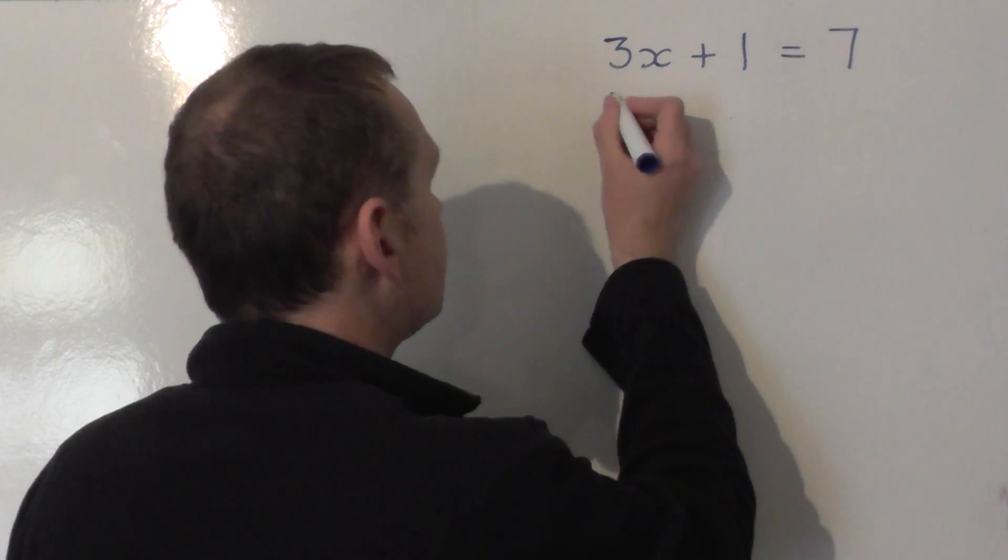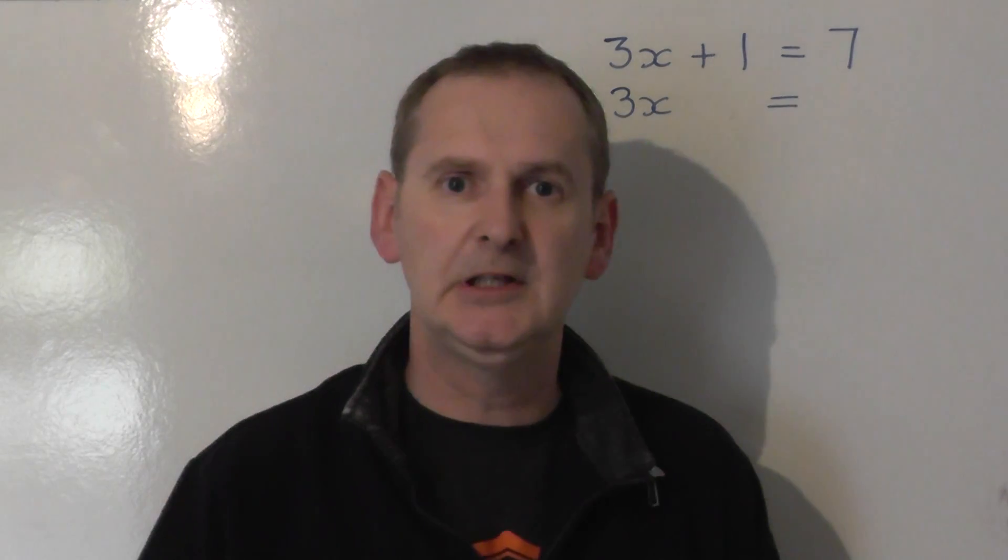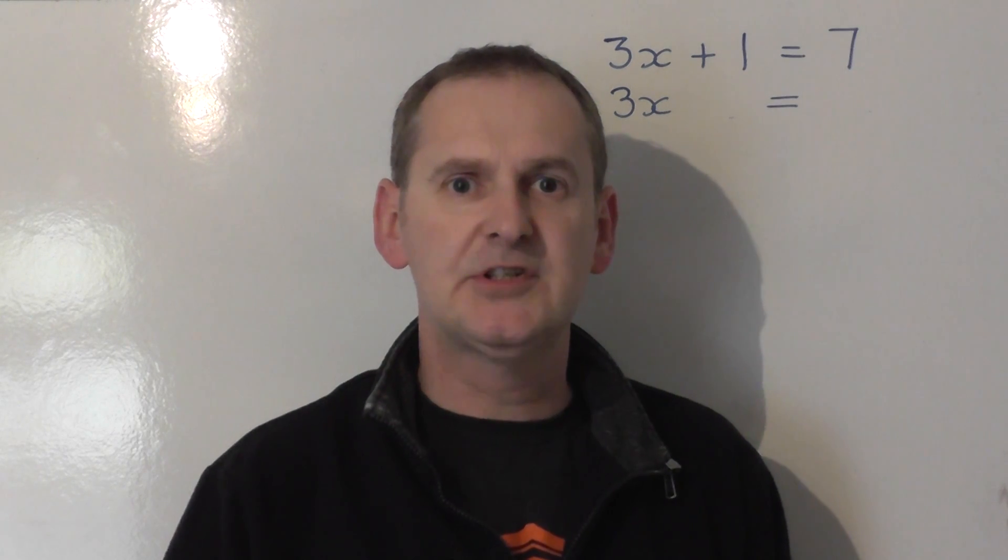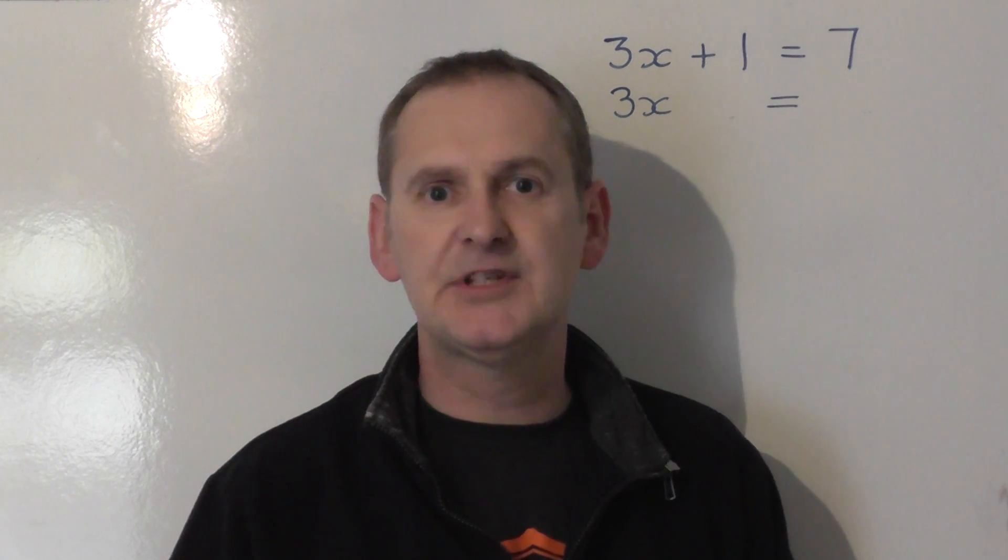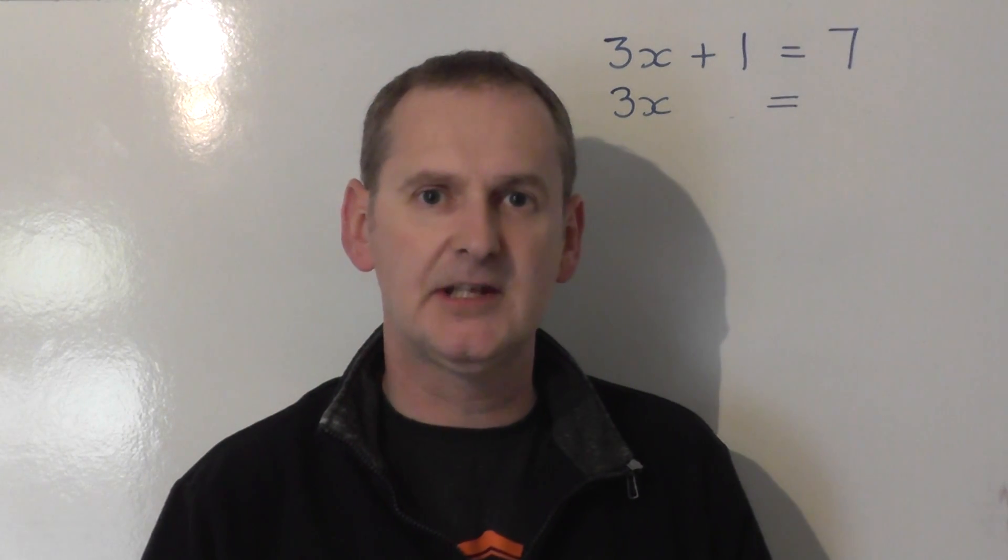So I'm going to leave the 3x exactly where it is. So next line, leave that exactly where it is. Put the equals in the middle. And I'm going to collect the numbers on the other side. I've got two numbers to deal with: the number 1 and the number 7. The 7 and the 1 are called number terms. Let's collect them together on the right hand side.